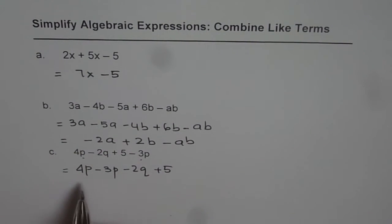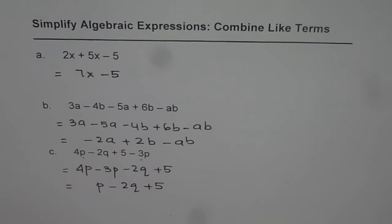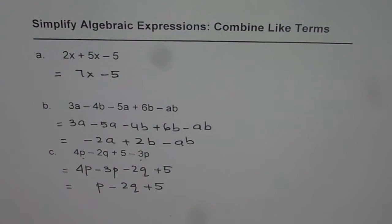It is a good practice to rearrange and then combine. 4p minus 3p is p. We normally do not write 1 as the coefficient, so p minus 2q plus 5. These are the simple steps involved to combine like terms in an algebraic expression and simplify them.